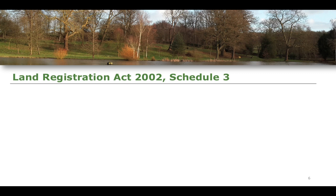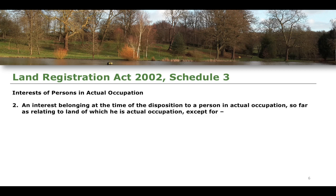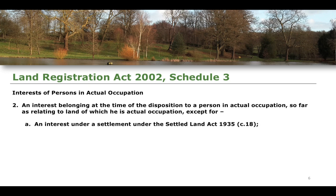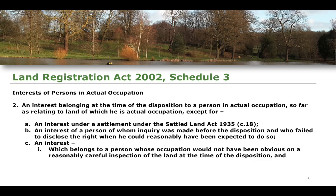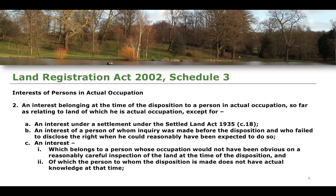Schedule 3 of the Land Registration Act says the following in relation to interests of persons in actual occupation: an interest belonging at the time of the disposition to a person in actual occupation, so far as relating to land of which he is in actual occupation, except for an interest under a settlement under the Settled Land Act 1935, an interest of a person whom inquiry was made before the disposition and who failed to disclose the right when he could reasonably have been expected to do so, and an interest which belongs to a person whose occupation would not have been obvious on a reasonably careful inspection of the land at the time of the disposition and of which the person to whom the disposition is made does not have actual knowledge at the time.